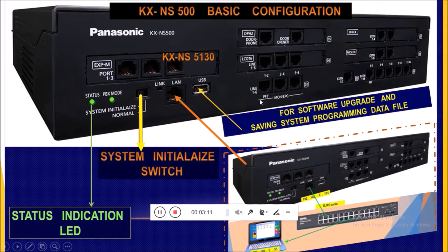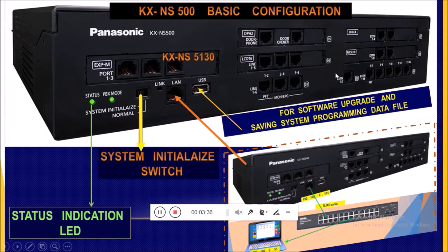After that, we find three RJ45 ports to connect CO lines — each port will be used to connect two outside analog lines. This port is a digital RJ45 port which can be used to connect to the Panasonic digital phones. This last card is used to connect 16 single line telephones as stated before.